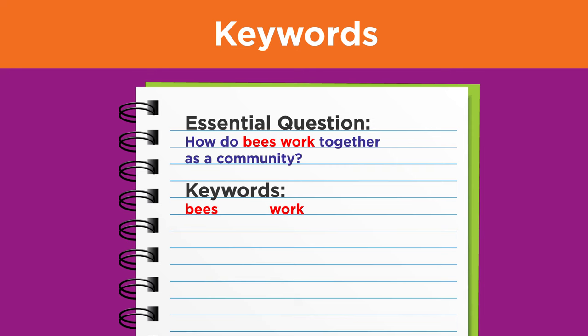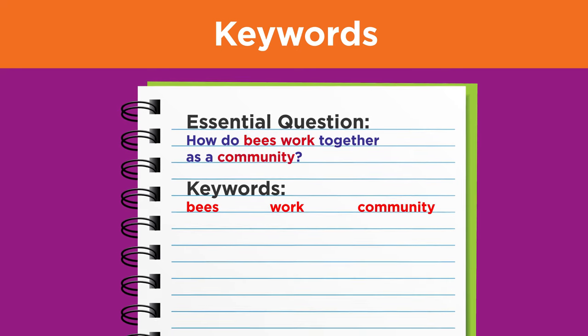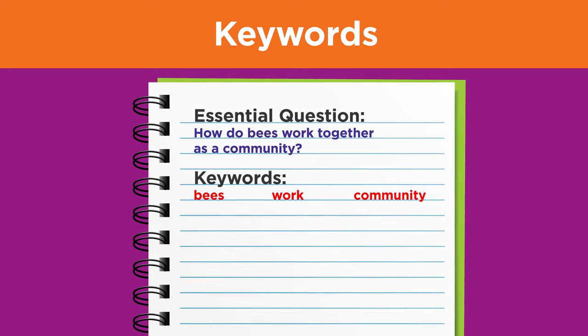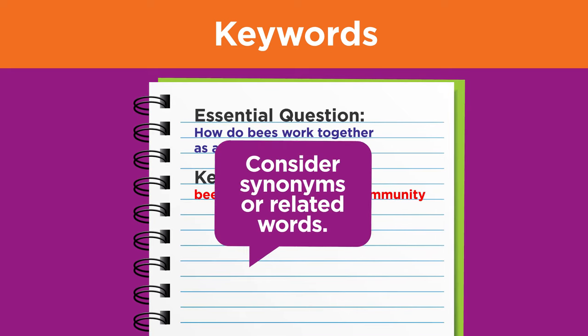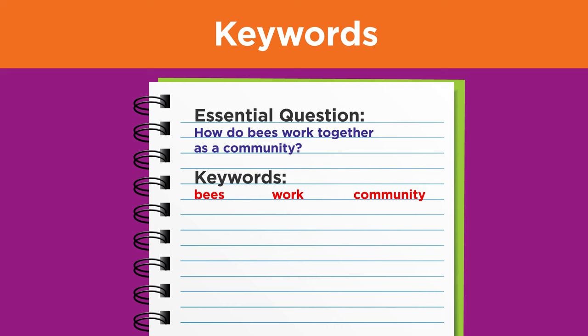Finding the keywords in your question is just the beginning. Let's look at a few ways to brainstorm more keywords. First, consider synonyms, or words that relate to your main idea words. For bees, we could add honeybees, pollinators, and mason bees. For work, we can add roles and jobs. And for community, we can add colony, hive, interdependence, habitat, and social.